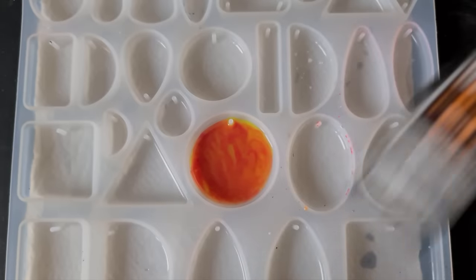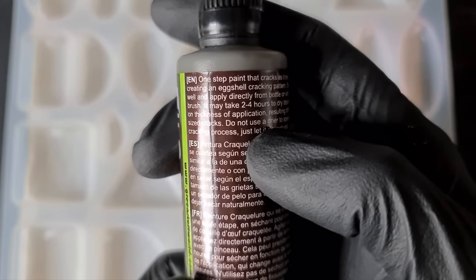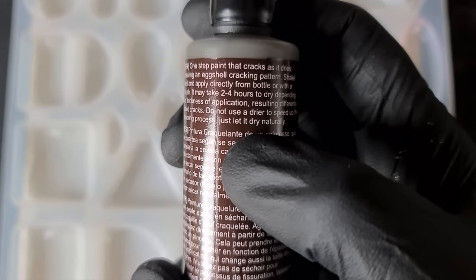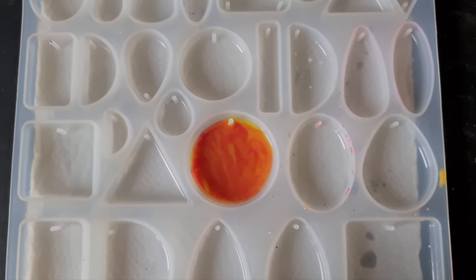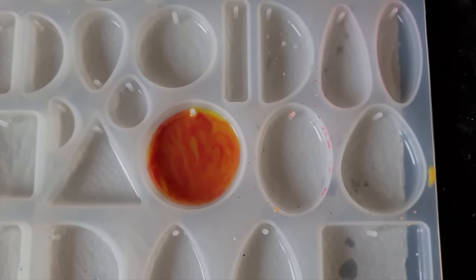So it comes with a ball bearing inside. It does say not to accelerate the cracking of this paint by using heat. It does say two to four hours, but I didn't apply a very thick amount of this stuff and it did dry within the hour. So we just shake it up and then I just dotted around the surface of the resin.